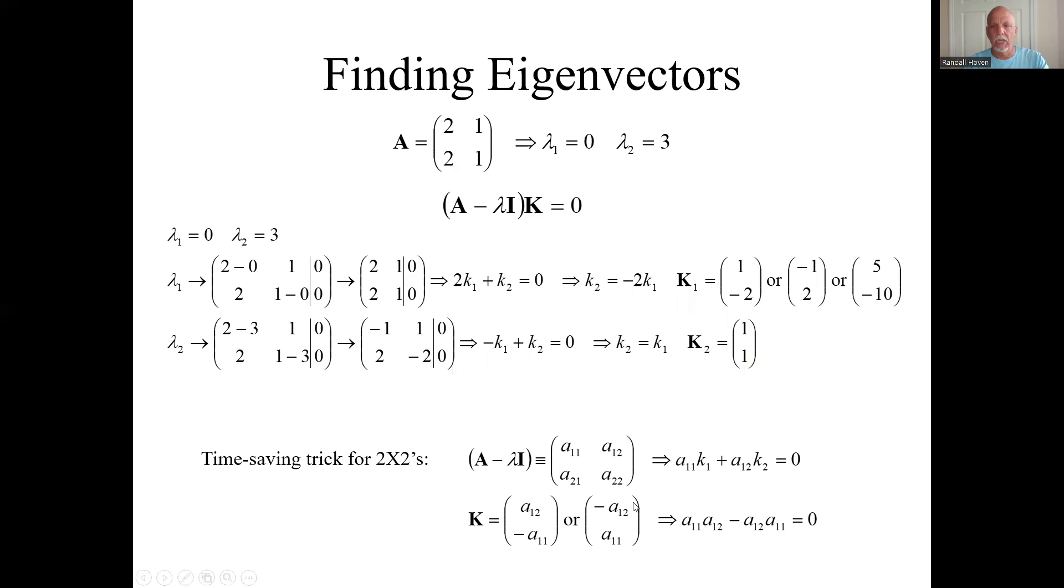If you just have a two-by-two case, there's kind of an algebraic trick, a shortcut to spare yourself of this arithmetic. Go through - say this is your generic matrix. And you want to find the lambdas or the K's. Excuse me. This is the result after subtracting off the lambdas. It's like this guy here. This is what you have. You could just say the vector is a12 over negative a11.